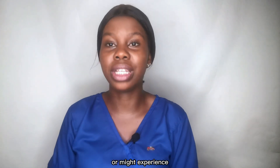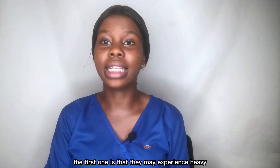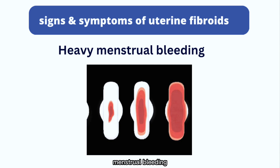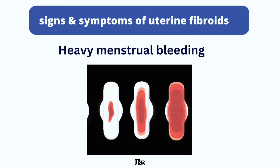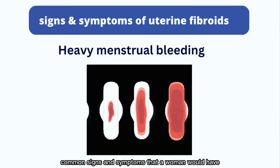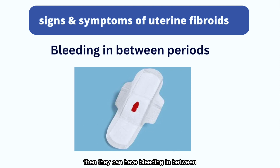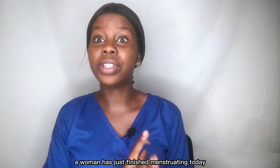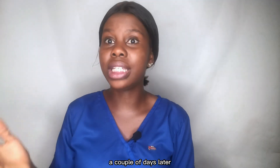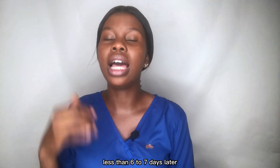What are the signs and symptoms a woman might experience with uterine fibroids? The first is heavy menstrual bleeding, though that is not the only cause. Next is dysmenorrhea, which is painful menstrual periods. Women can also experience bleeding between their periods — for example, six to seven days after finishing menstruation, they may begin experiencing bleeding as if they are on their period again.